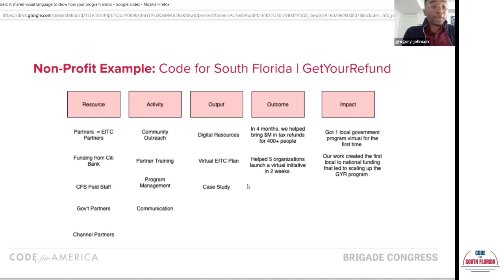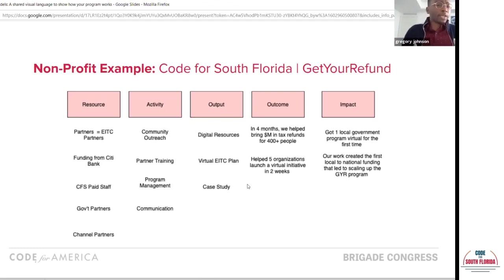In terms of impact, the work we did at the local level was something the funder could see and say, 'This is great — we want to bring this to other cities.' They went to Code for America to fund expanding Get Your Refund, making us one of the first brigades where a local funder took this model to Code for America and funded them to expand the work. After implementing this logic model, we were also able to bring on a grant coordinator to help us hit different funding initiatives. If you're unfamiliar with this methodology, there are write-ups around impact cascades that touch on many of the same points.